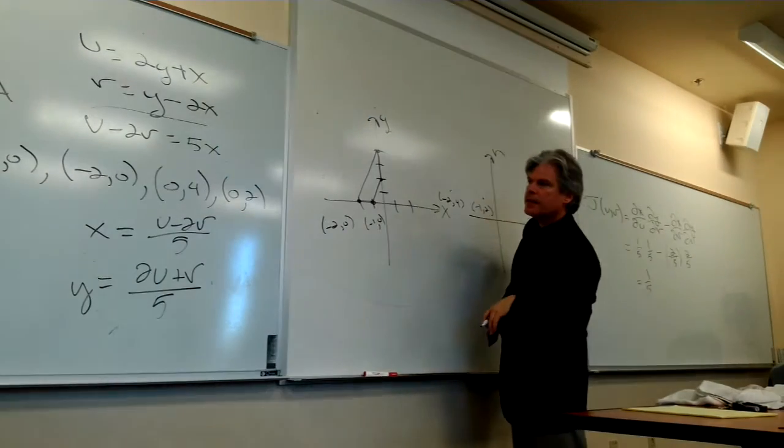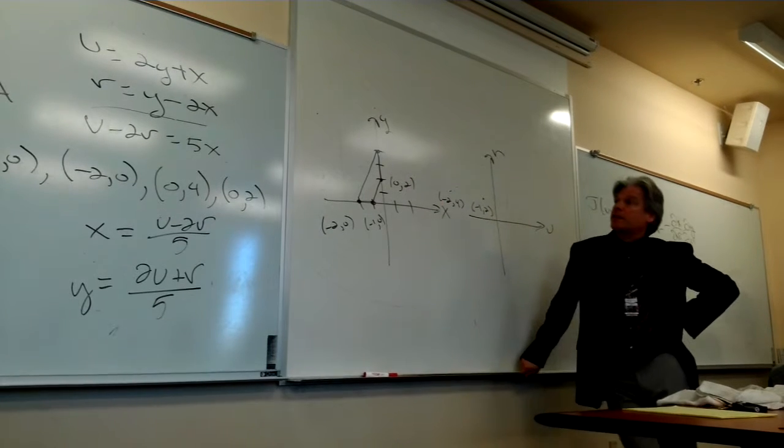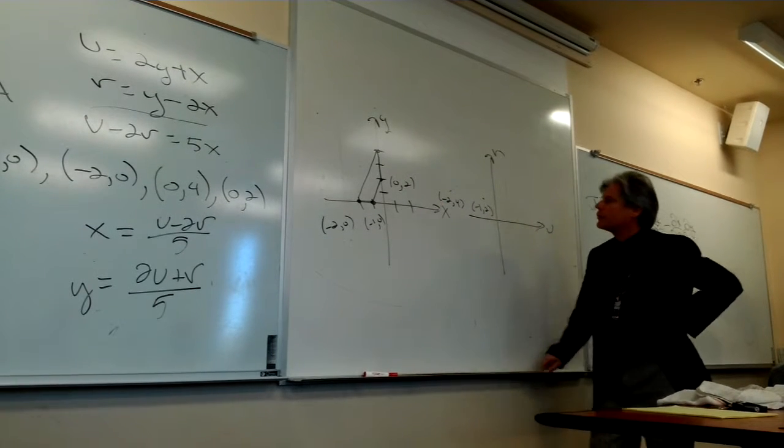Well, next, if I take that corner point at 0, comma, 2, here plugging those values in, that's going to give me a positive 4, comma, positive 2.